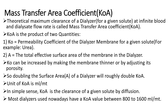The unit of K0A is ml per minute. In simple terms, K0A is the clearance of a given solute by diffusion. Most dialyzers in use today have a K0A between approximately 800 and 1600 ml per minute. If K0A is less than 800 ml per minute, it is a low efficiency dialyzer; if more than 800 ml per minute, it is a high efficiency dialyzer — and nowadays high efficiency dialyzers are widely used.